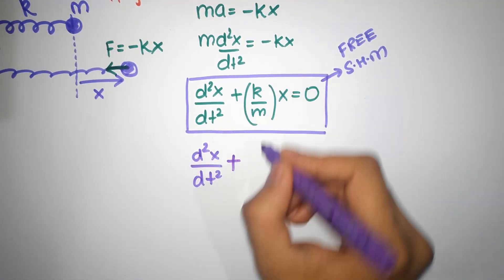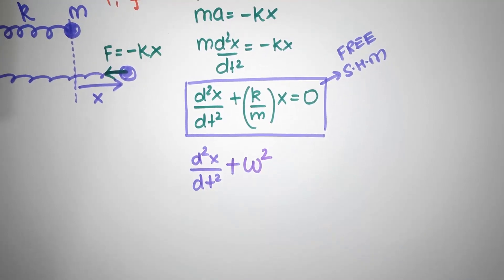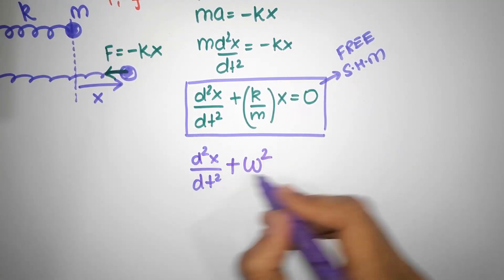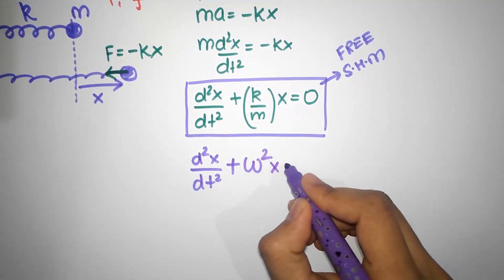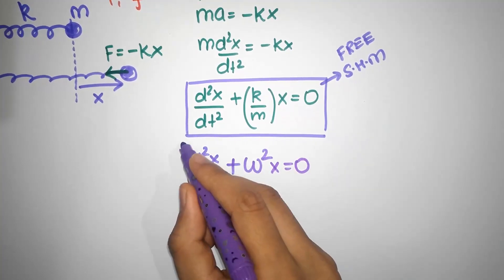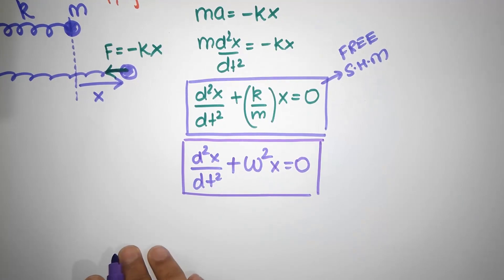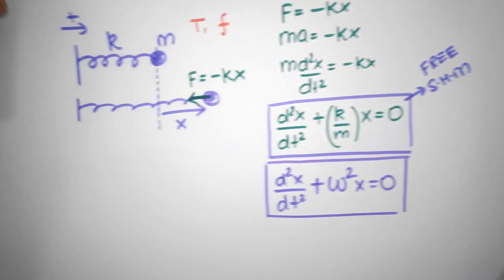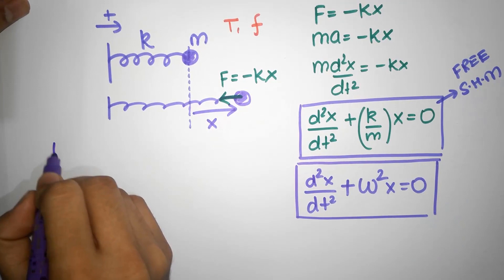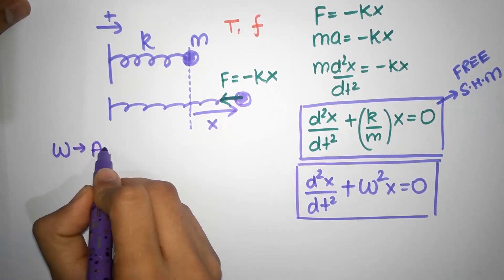Plus, whatever comes over here is always going to be omega squared times that same quantity over here. X should be equal to zero. This is the general differential equation for free SHM. And we need to understand what omega is. Omega is called as the angular frequency.